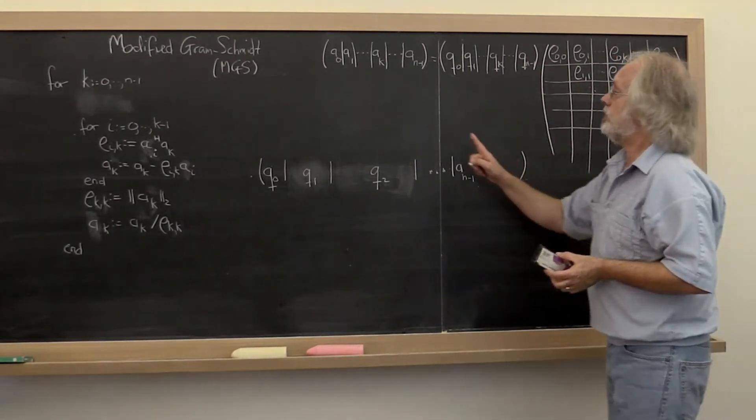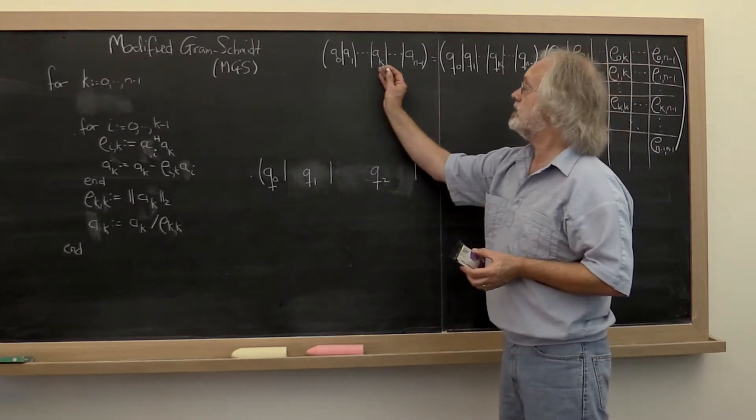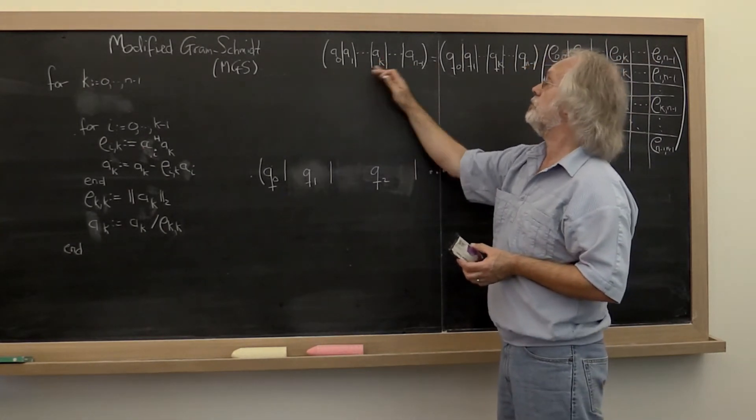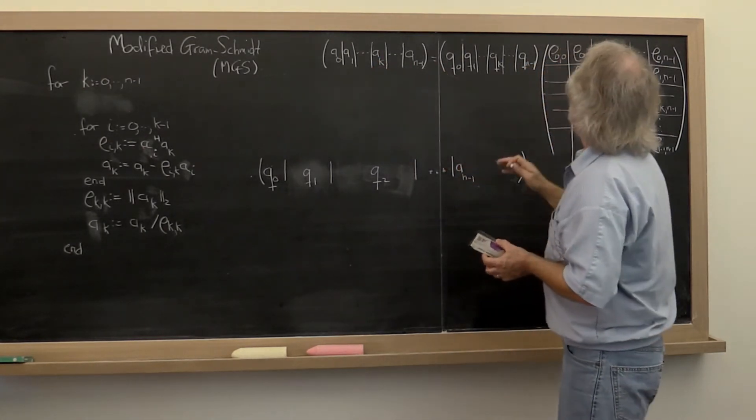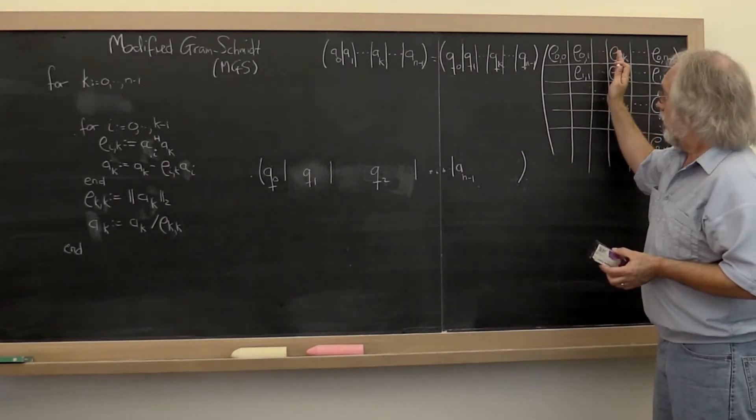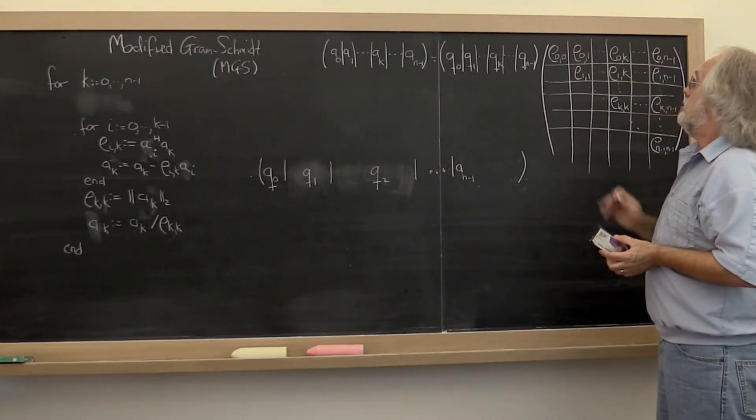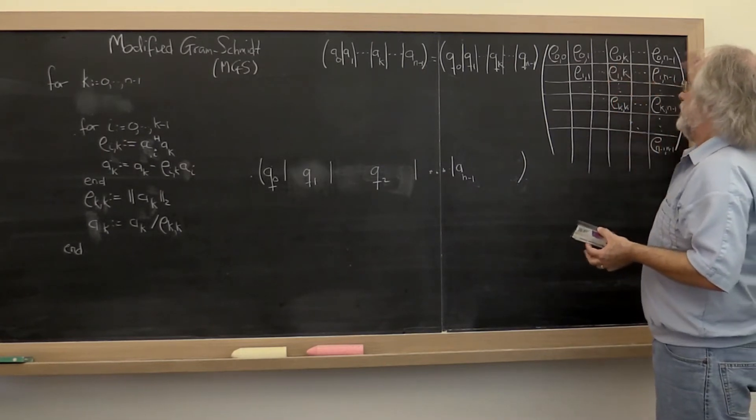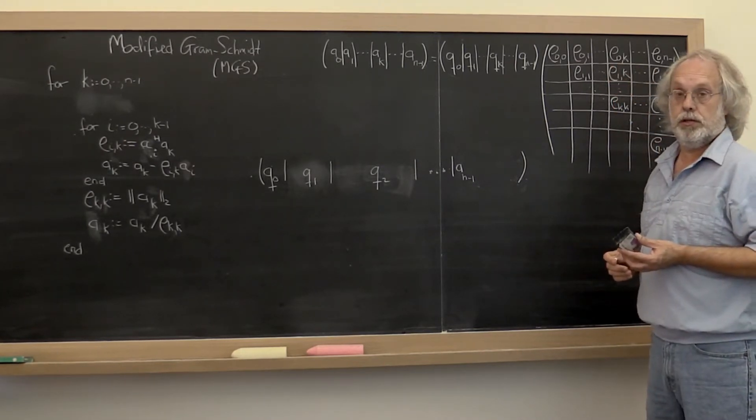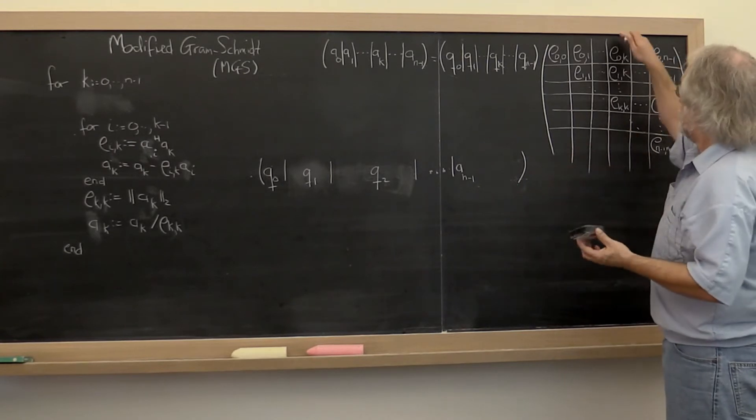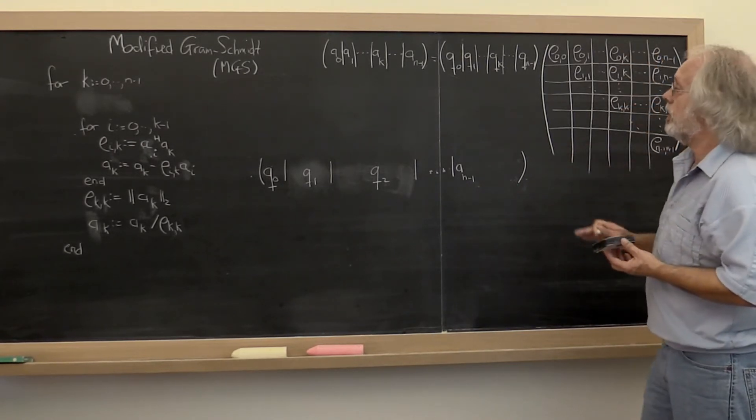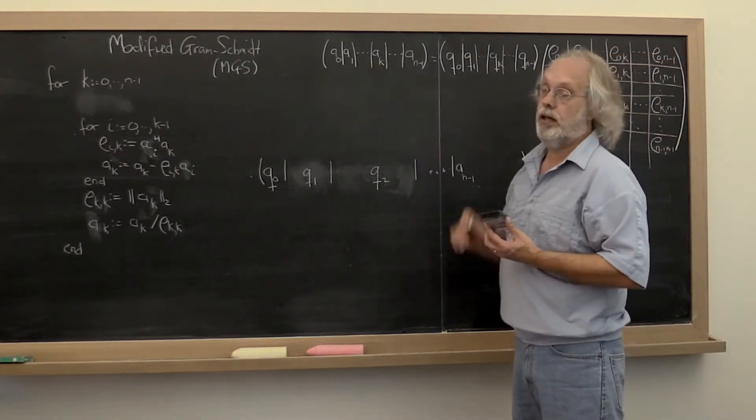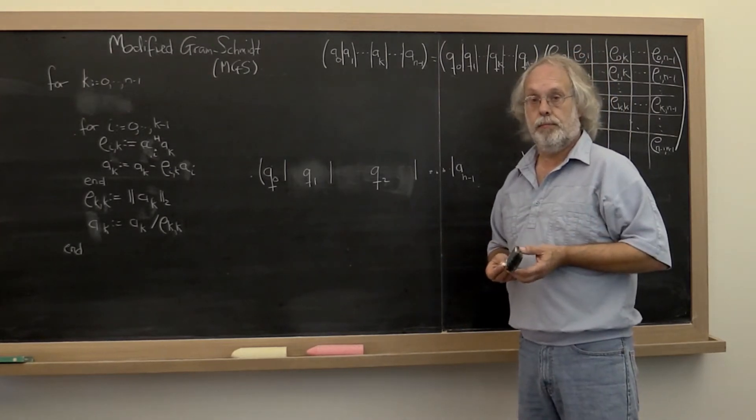During the kth iteration you focus on A, everything to its left has been completely finished, everything to its right has not been touched. Everything in R to the left of the kth column has already been finished, everything to the right has not yet been computed. And in the current iteration we just fill in the next column of R and we overwrite A with Q.